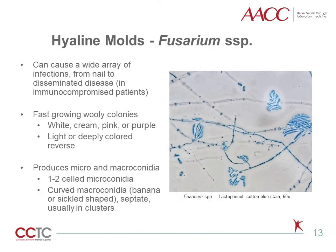Fusarium species can cause a wide array of infections, from nail infection to disseminated disease, mostly in immunocompromised patients. It forms fast-growing, woolly colonies that can range from white or green to pink or purple, with light or deep color reverses. Microscopically, micro- and macroconidia can be seen. Phialides produce one to two cell microconidia, and the macroconidia are curved, banana, or sickle-shaped, septate, and usually seen in clusters.